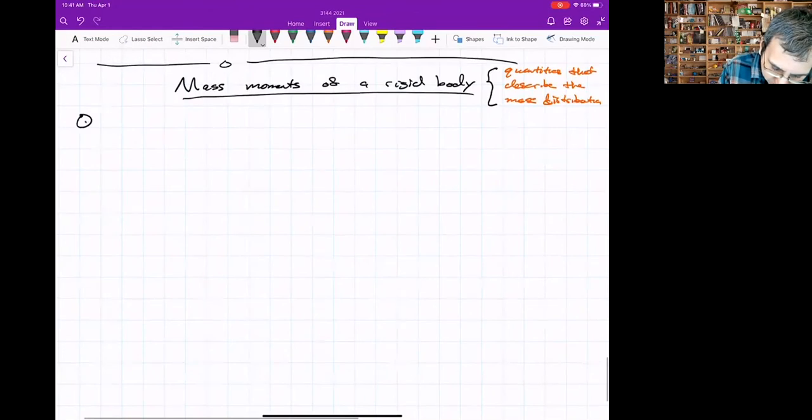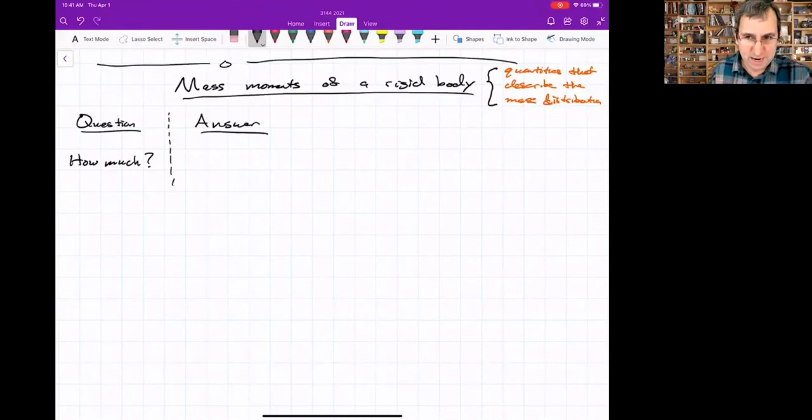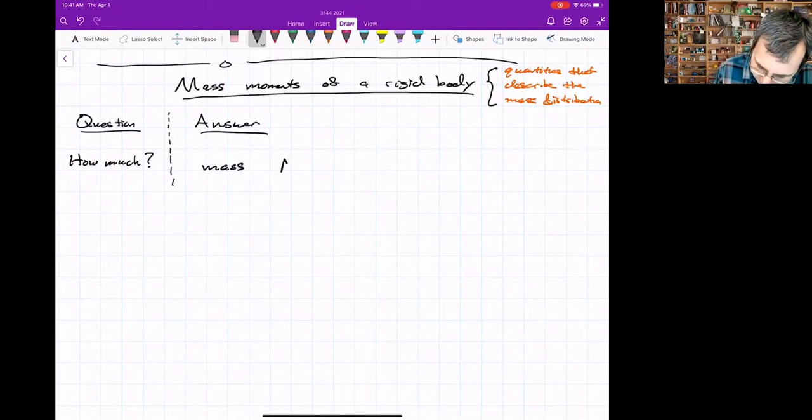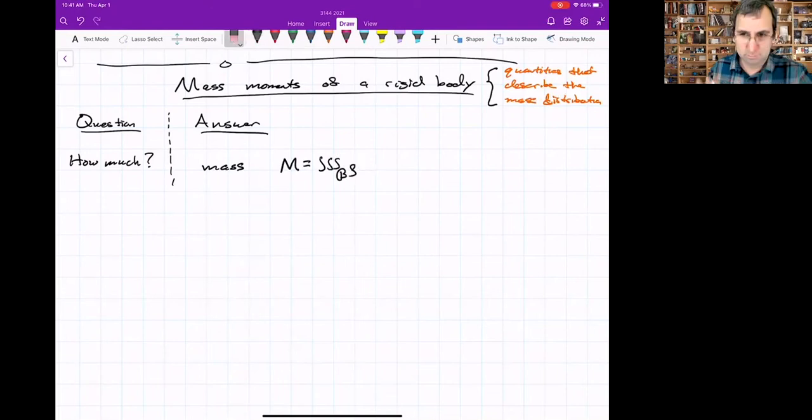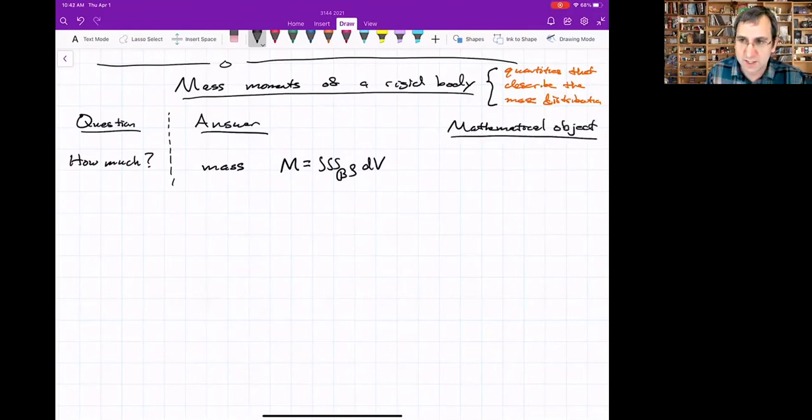The question, if our question is just how much mass is there, the answer would be the mass. We've used a capital M for the mass. This is the triple integral of the density, assuming density could possibly be a function of position. So it's a triple integral of the density integrated over the volume, which is just how much mass there is. As a mathematical object, this is just a scalar.